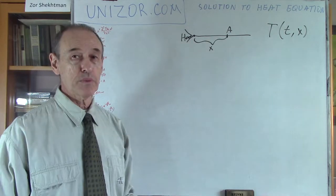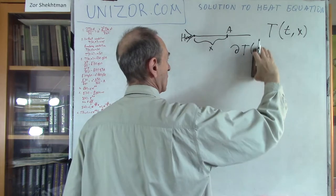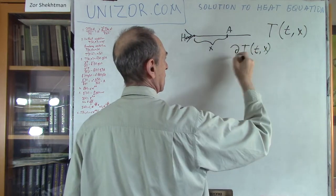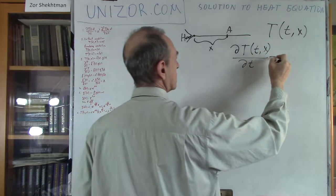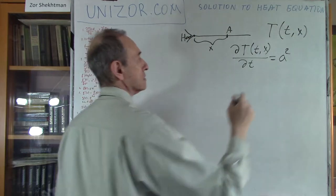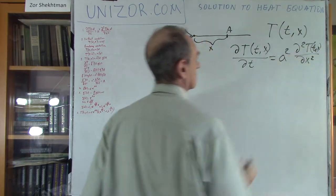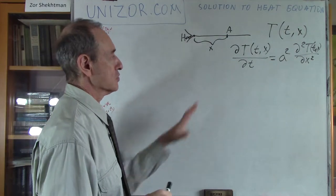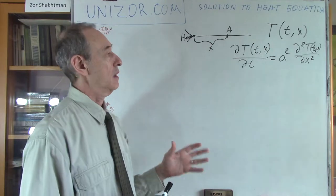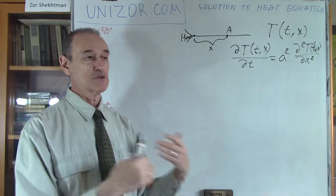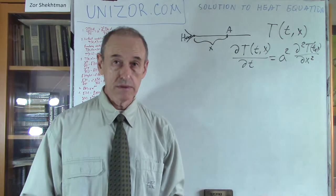What we came up with is the so-called heat equation, which looks like this: the partial derivative by time of this temperature function should be equal to some positive constant times the second partial derivative of the same function by coordinate X. That's our partial differential equation derived using logical, physical, and mathematical considerations. This is the end of the previous lecture. Now, this lecture I would like to devote to solving this particular differential equation, and I will present you a method which can be used.